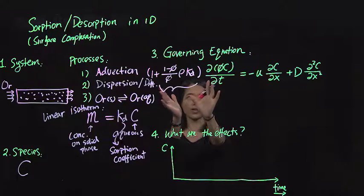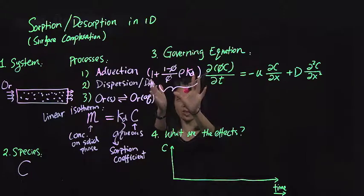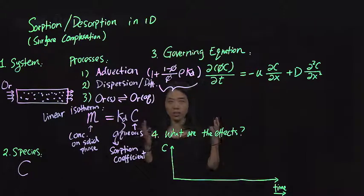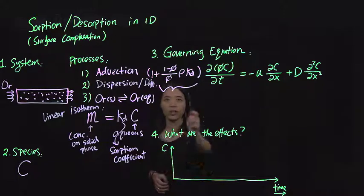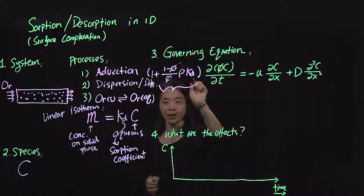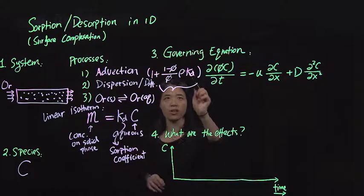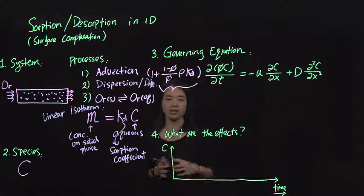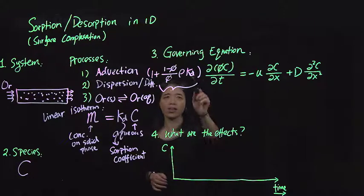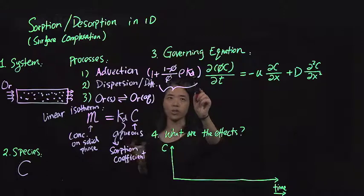For example, if you think about this, if this is a constant, right? If given a particular porous media, you would have the same porosity, how much pore space you have. You would have the same density of the solid phase.